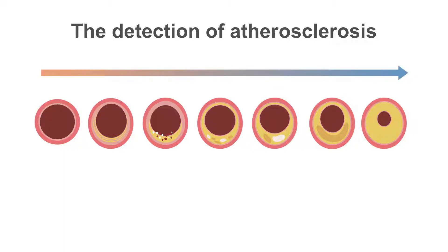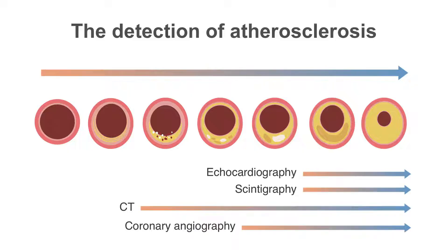Stress testing with echocardiography, myocardial perfusion scintigraphy, and treadmill testing only have the ability to detect coronary disease that causes a significant reduction in blood flow. Coronary CT, on the other hand, is the only imaging modality that has the ability to detect subclinical plaque and early vessel calcification in the wall of a vessel before a reduction in blood flow occurs.